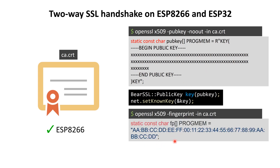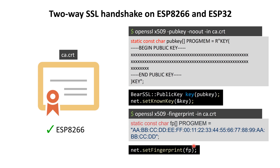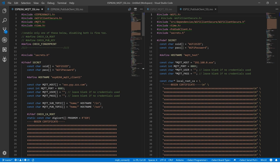Another authentication method is checking the fingerprint: extract it from the CA certificate using an OpenSSL command, paste the value into your code, and call net.setFingerprint(fp). Every time BearSSL connects, it checks for that fingerprint. However, fingerprints can be an issue because many servers change them frequently, so this method may not work in all cases.